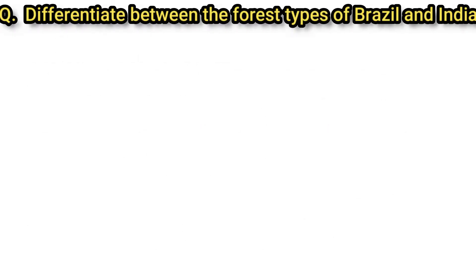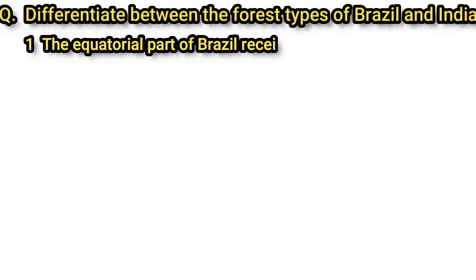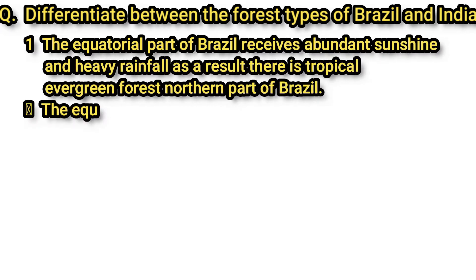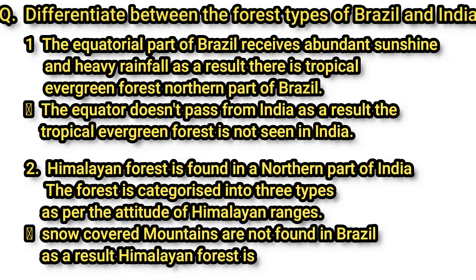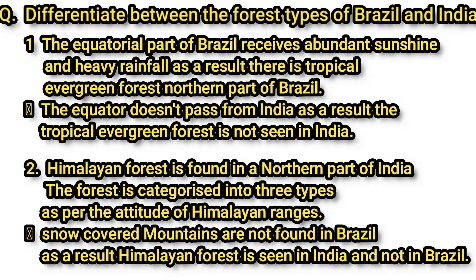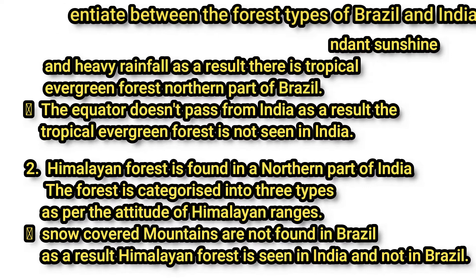After studying the vegetation of Brazil and India, let's understand the differences. The equatorial part of Brazil receives abundant sunshine and heavy rainfall, producing tropical evergreen forest in the northern part of Brazil. Since the equator does not pass through India, tropical evergreen forest is not seen there. Himalayan forest is found in northern India and depends on altitude. Since snow-covered mountains are not found in Brazil, Himalayan forest is not seen in Brazil.